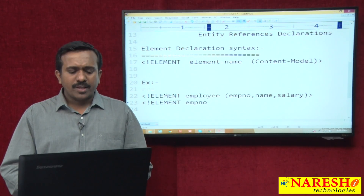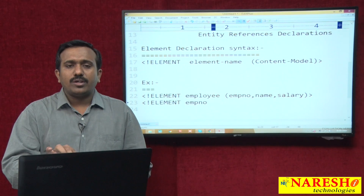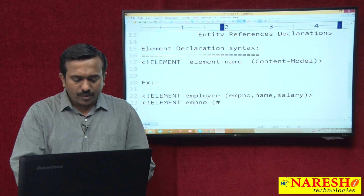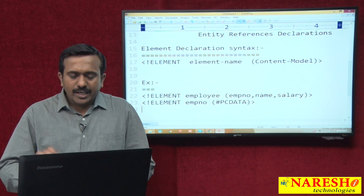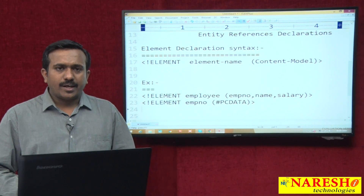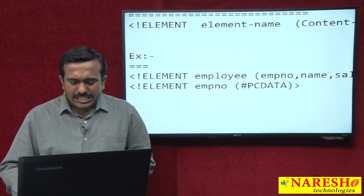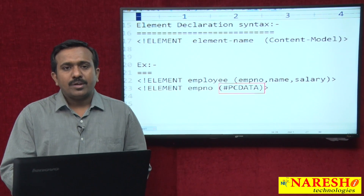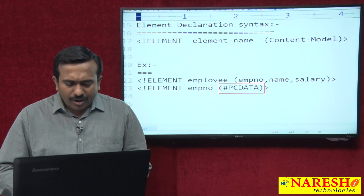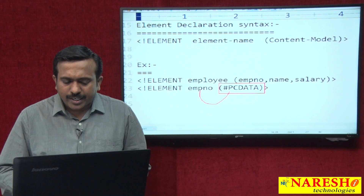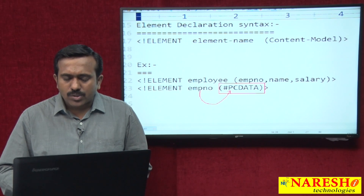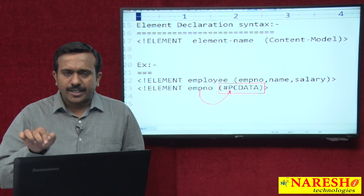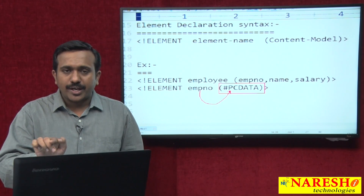For EMP number, I want to allow only text data. To allow only text data for EMP number, we use one data type called PC data. PC data is a data type used only for elements. If any element is declared with PC data, the element allows only text data.